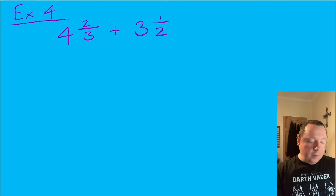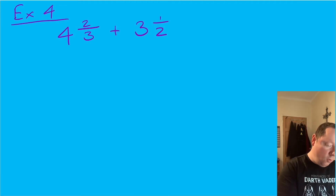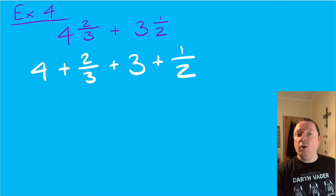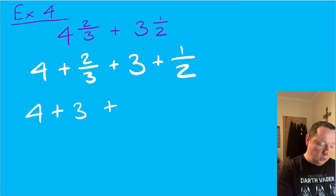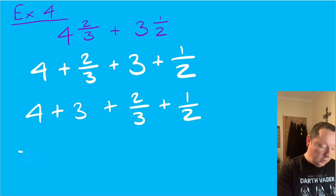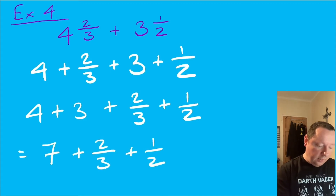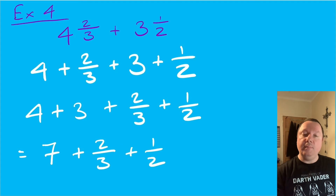Example four: four and two thirds add three and a half. Let's split this up: we've got four plus two thirds plus three plus a half. Rearranging so the whole numbers are together and the fractions are together, we get four and three plus two thirds plus a half. Whole numbers can just be added together as normal — four plus three is seven. So I need to do seven and two thirds add a half, meaning the big thing I need to do is two thirds plus a half, then add it on to seven.